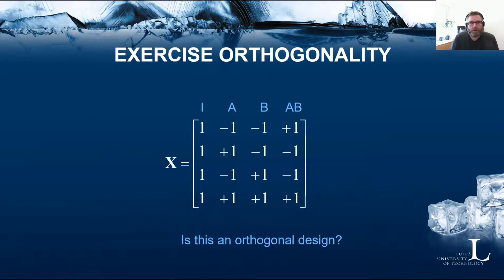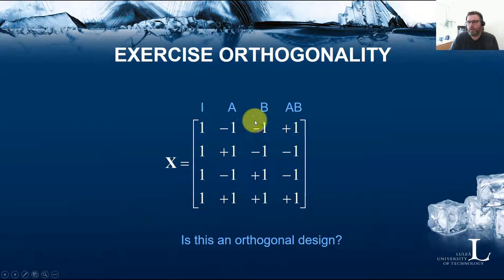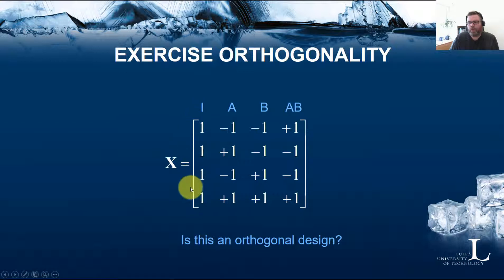Let's take a look at this design. This is a two-level factorial design matrix — you might recognize this. We have factor A: minus one, plus one, minus one, plus one; and B: minus one, minus one, plus one, plus one; and then the AB interaction. This is in standard order, and then we complete it with a first column with only ones. The question is whether this is an orthogonal design or not — please pause the video and think about how you would go about showing that.